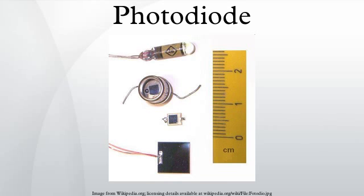A phototransistor is a light-sensitive transistor. A common type of phototransistor, called a photobipolar transistor, is in essence a bipolar transistor encased in a transparent case so that light can reach the base-collector junction.